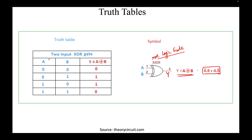The truth table lists all possible input combinations and their outputs. For two inputs, the combinations are: A=0, B=0; A=0, B=1; A=1, B=0; and A=1, B=1. For the first row, when A=0 and B=0, we evaluate Y = A-bar·B + A·B-bar: zero-bar is 1, times 0 is 0, plus 0 times 1 is 0. So Y = 0.